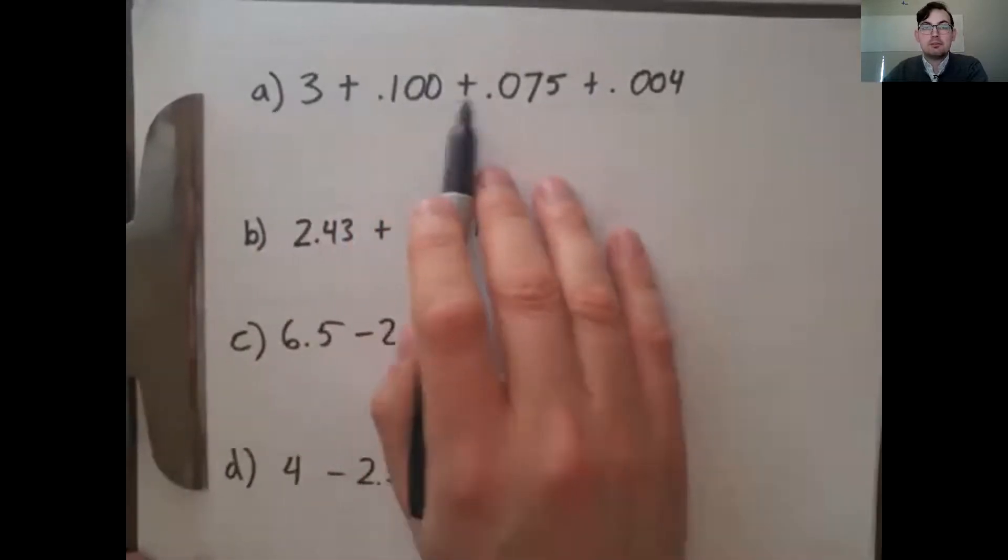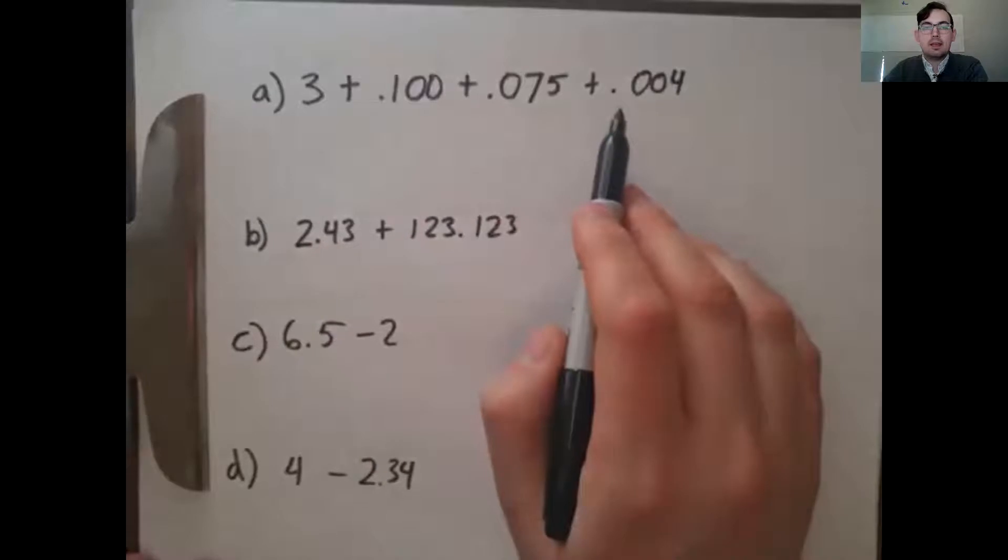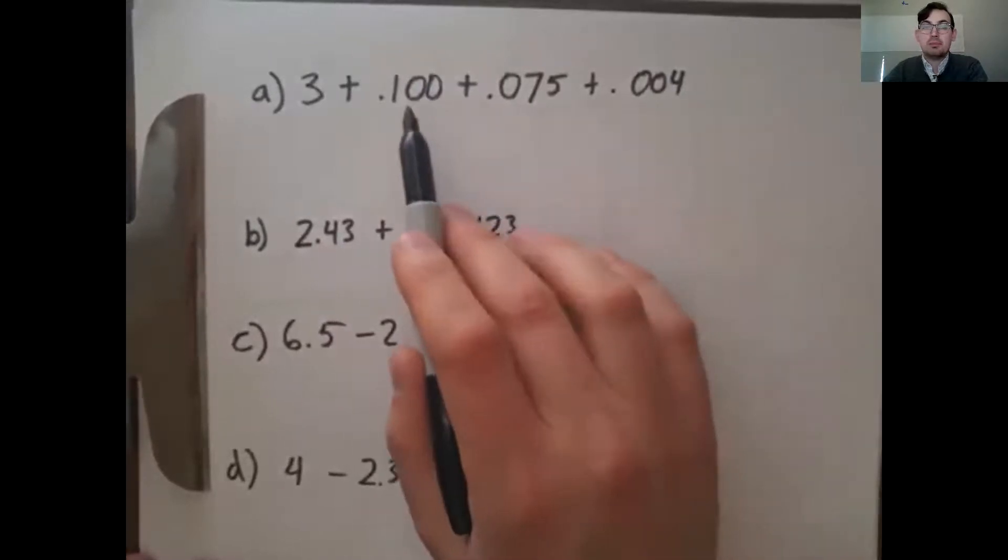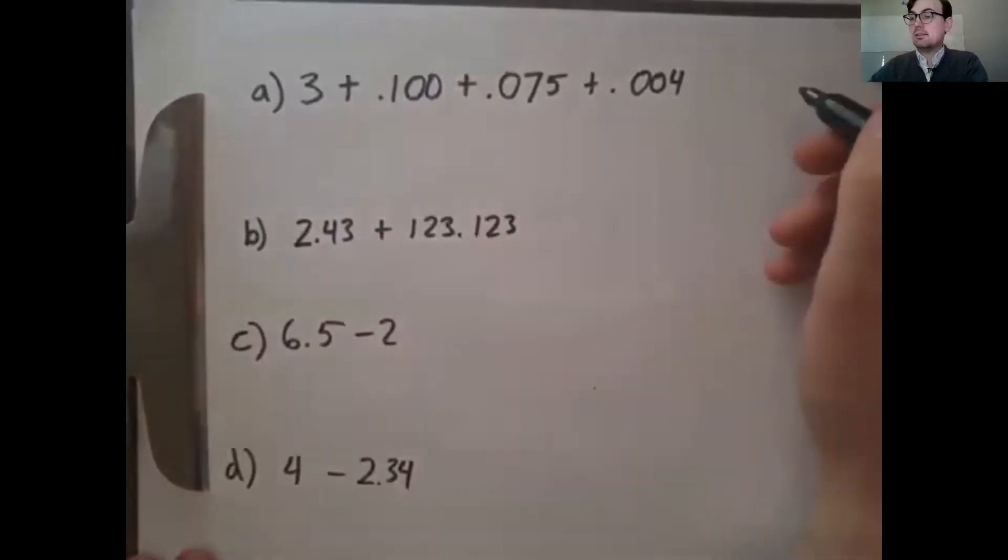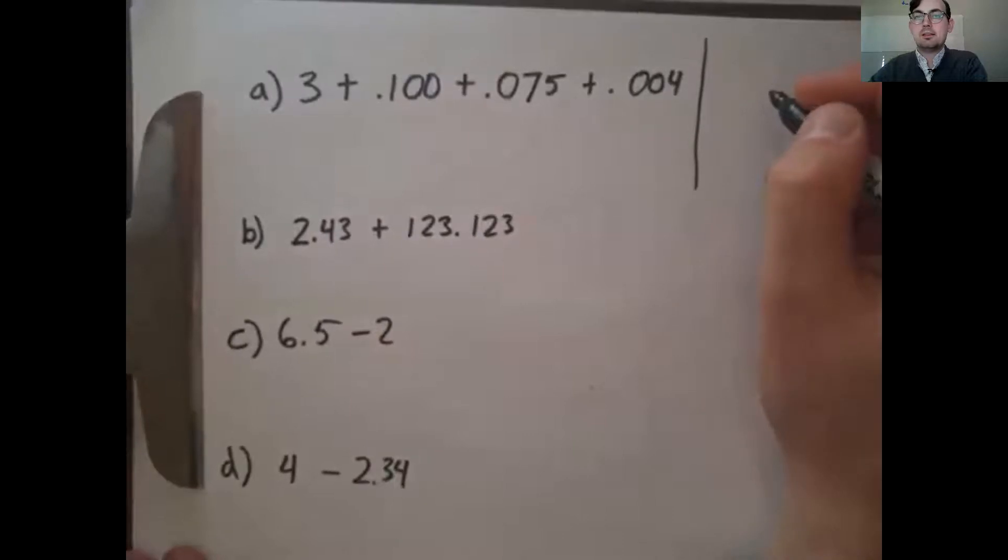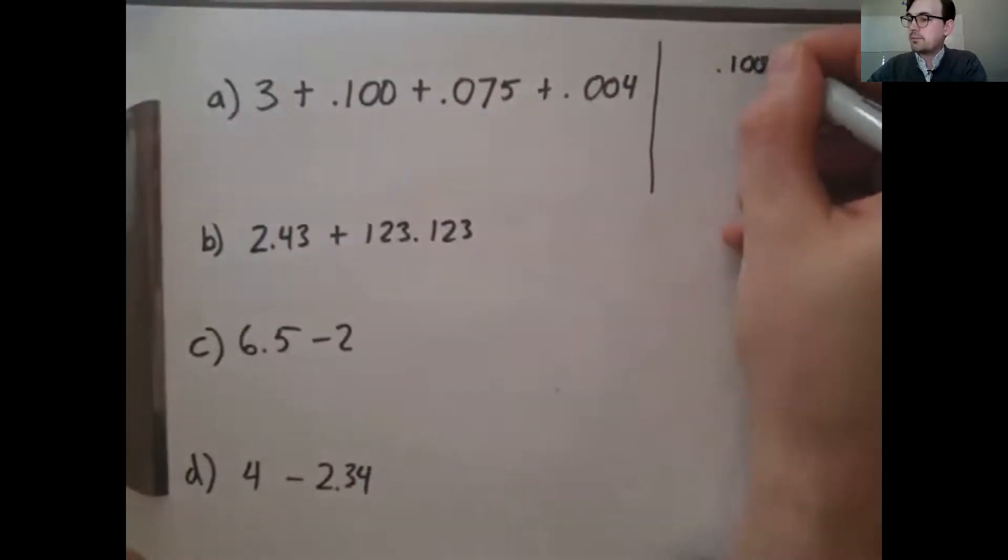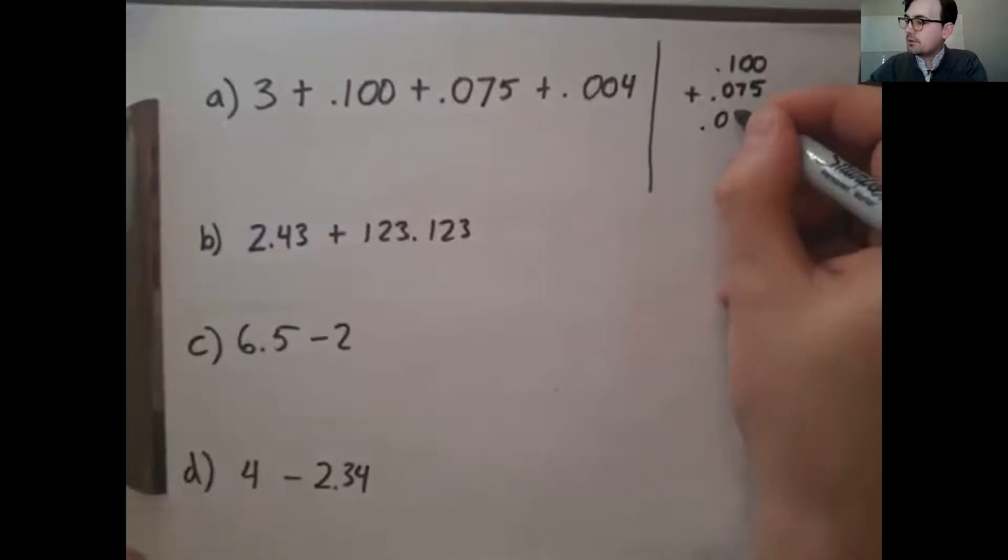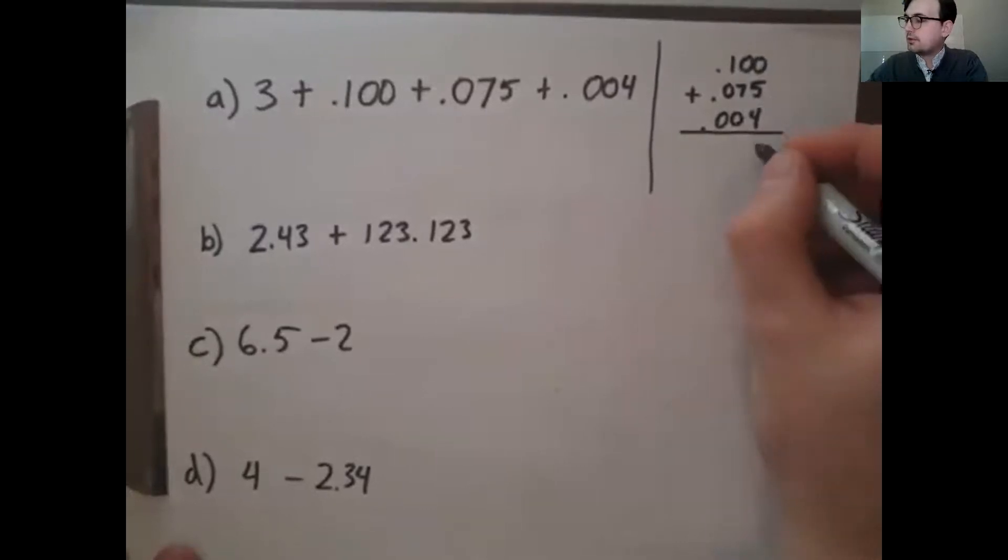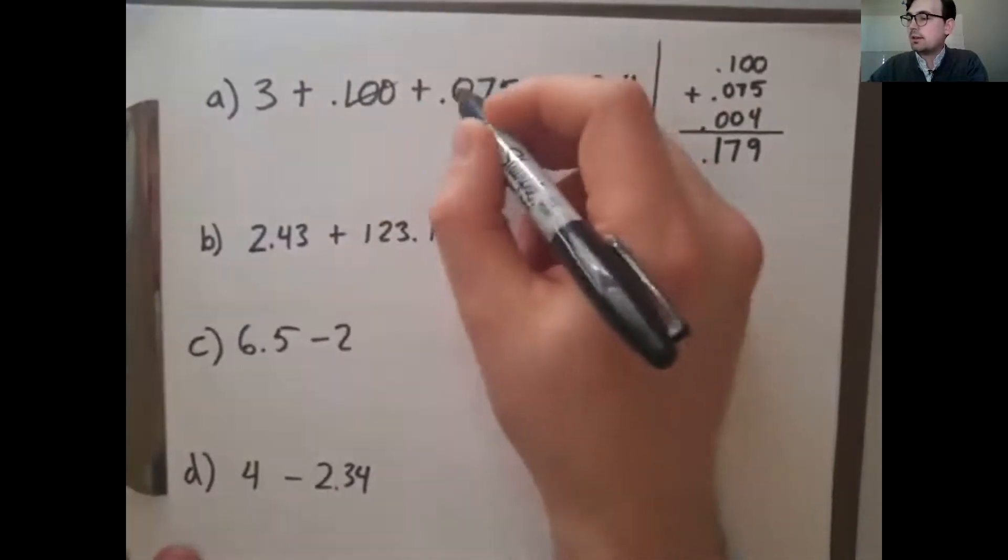So let's start with the first one here. So I've got 3 + 0.100 + 0.075 + 0.004. So what I want to do here is I want to add all these together. And one thing I want to be really careful about is that I get the decimal places in the right place. This one is bigger than this seven here because of its location, that decimal place. So one thing I like to do with these is I'll often come over here and line all these decimal places out. I'm going to leave three out of this for a sec. I'm going to line up 100, 0.075, 0.004. I'm going to add all those up. So I've got 5 + 4, that's going to be 9, 7. All of these are zero in that line. So I've got 1. So this is 0.179.